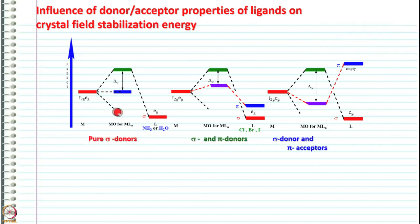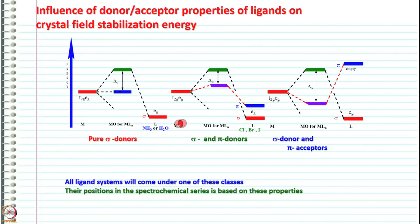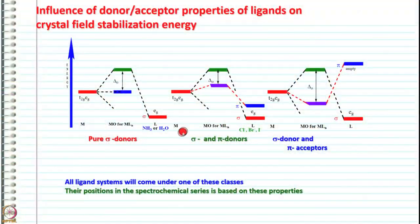So these three categories — pure sigma donors, sigma donors and pi donors, and sigma donors and pi acceptors — give precise meaning to the position of ligands in the spectrochemical series. If someone asks why chloride is a weaker ligand compared to water, we should not just cite CFSE — that is only evidence through electronic spectra. We have to identify which category the ligand falls into. This explanation gives a satisfactory answer for why different ligands have different properties.